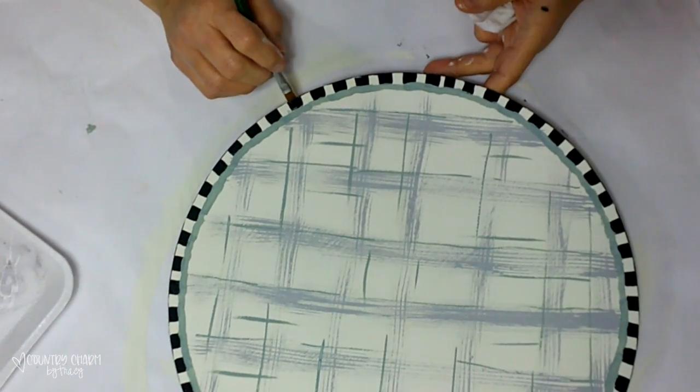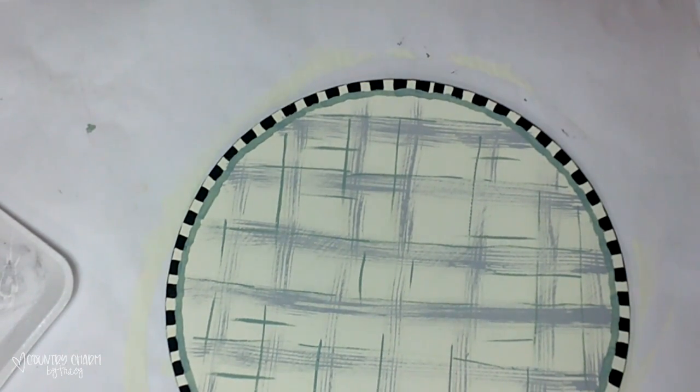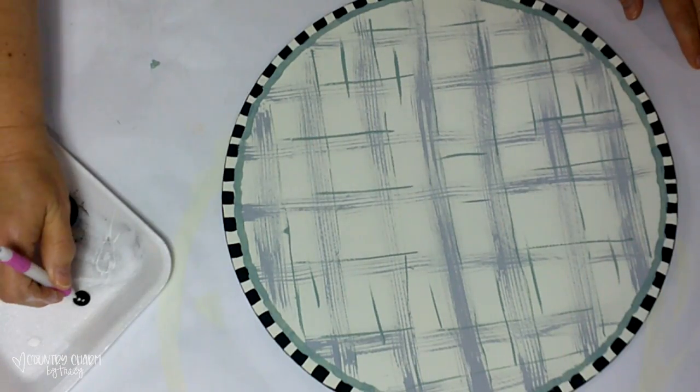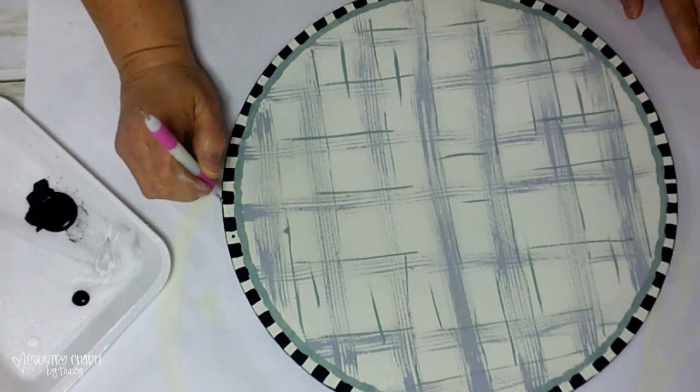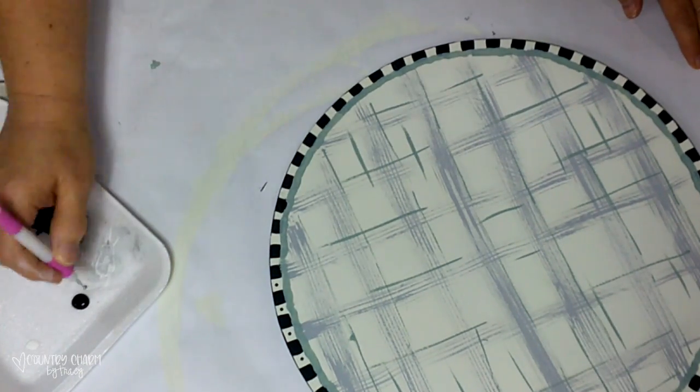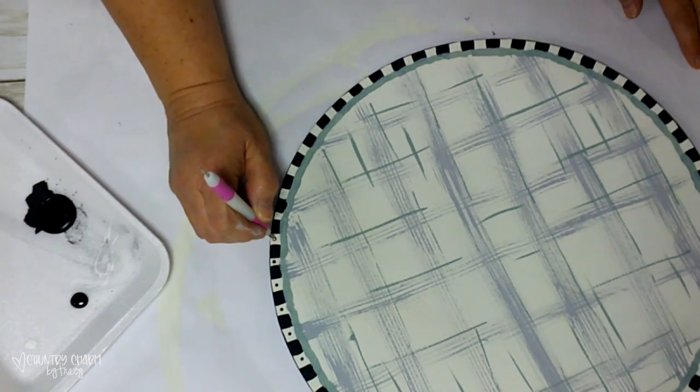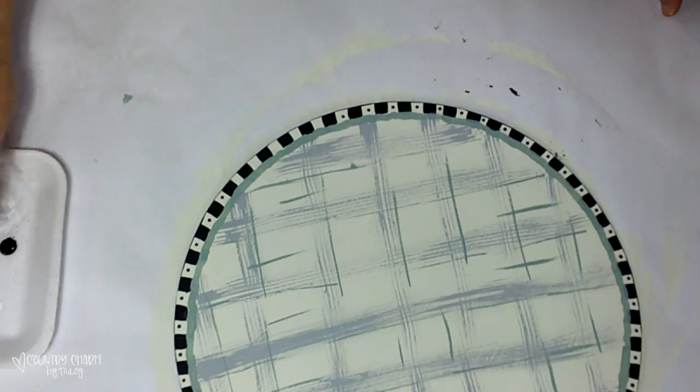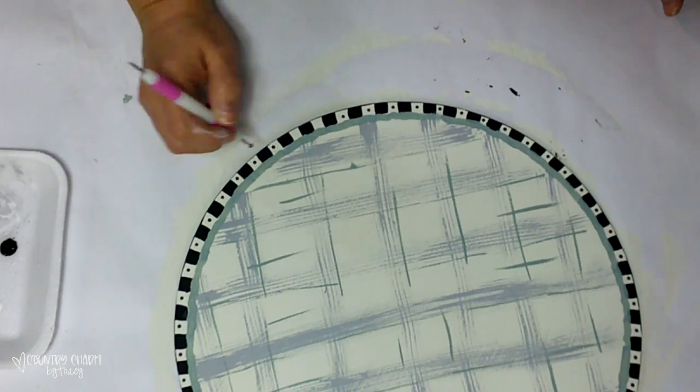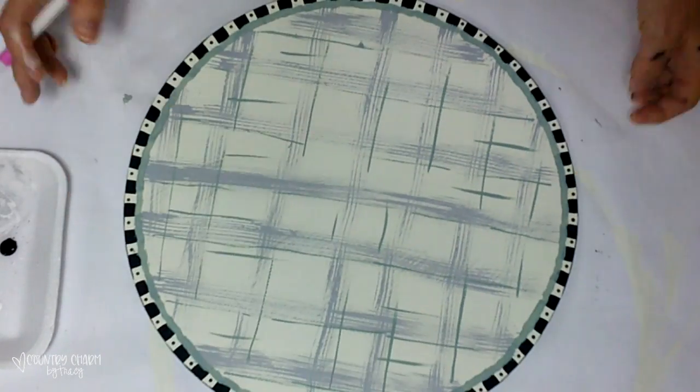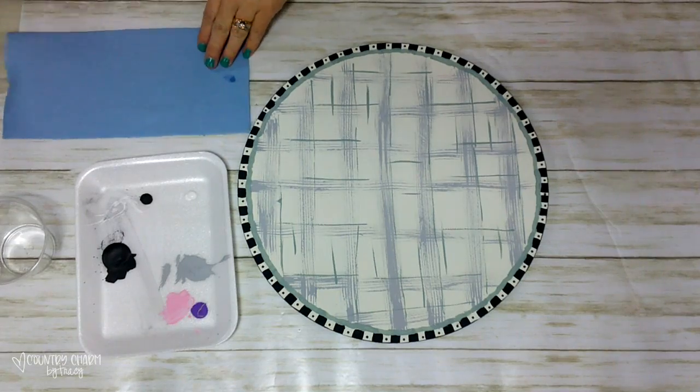Next what I'm going to do, I'm using a stylus that I got from the Dollar Tree and just making some polka dots just in between those stripes just to give it some character and just give it a pattern. And to get my dots consistent, I dip in the paint every single time. And that gives me consistent dots.